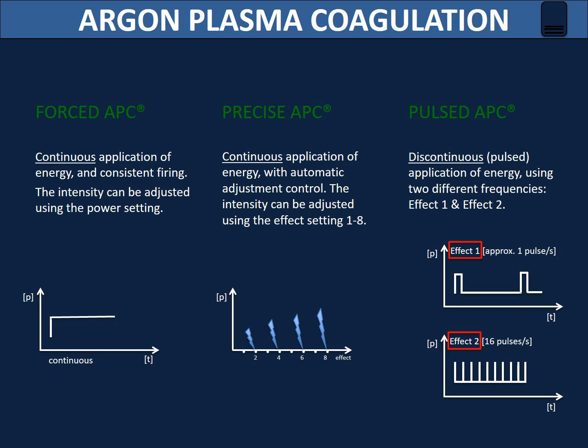In Force APC, there is continuous application of energy and consistent firing; the intensity can be adjusted using the power setting. In a more precise APC application, the intensity can be adjusted using different setting effects. In Pulsed APC, there is intermittent application of energy using two different effects: Effect 1 has short individual pulses suitable for treating small and superficial areas, while Effect 2 has a higher frequency of pulses and is used in treating larger bleeding areas. It is also used in tumor debulking with a high power setting and adjustable gas flow.